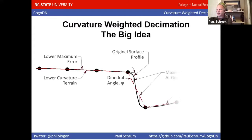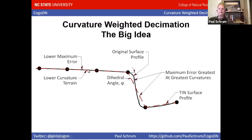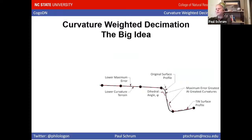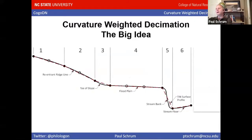The big idea is that at the stream bank there's a large error between the actual terrain and the profile cut from the triangles. Another big error further down, smaller error here, and almost negligible error on the floodplain. The error on the floodplain is so negligible that you could remove that point and still have accurate terrain information. So we're using the curvature of the terrain to identify which points are carrying more information and need to be retained.